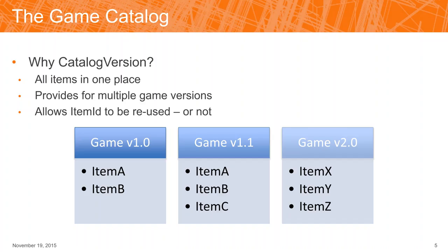All items in the player's inventory reference the catalogs they came from. Items from version 1 of the game are now something only original players could possibly have — a badge of honor in some games. That could become something valuable that people might pay a premium for in trading. I'm highlighting this because we've seen a number of people create multiple catalogs to spread their items out, which creates an awkward situation when they realize they have to replicate all those catalogs for subsequent releases.